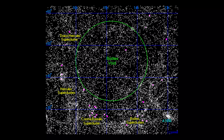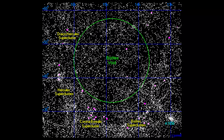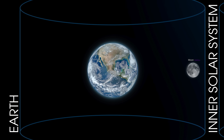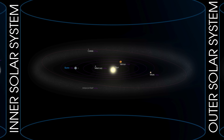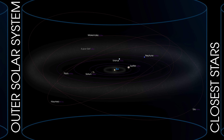To understand what Boötes' Void really is, we need to understand some context. We know that space exists outside of Earth, but even outside of Earth's atmosphere, space is quite populated. Astronomically speaking, you are spitting distance from other objects like the Moon, asteroids, other planets, and the Sun. You can still reasonably use kilometres or miles to measure distances at this point.